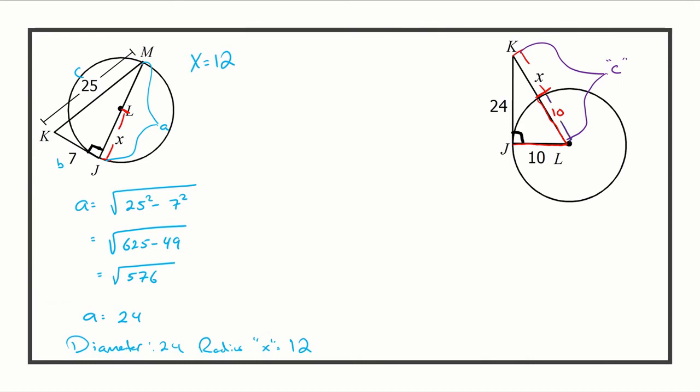Since we're looking for c, it's simply going to be 24 squared plus 10 squared. 24 squared is 576 plus 100.